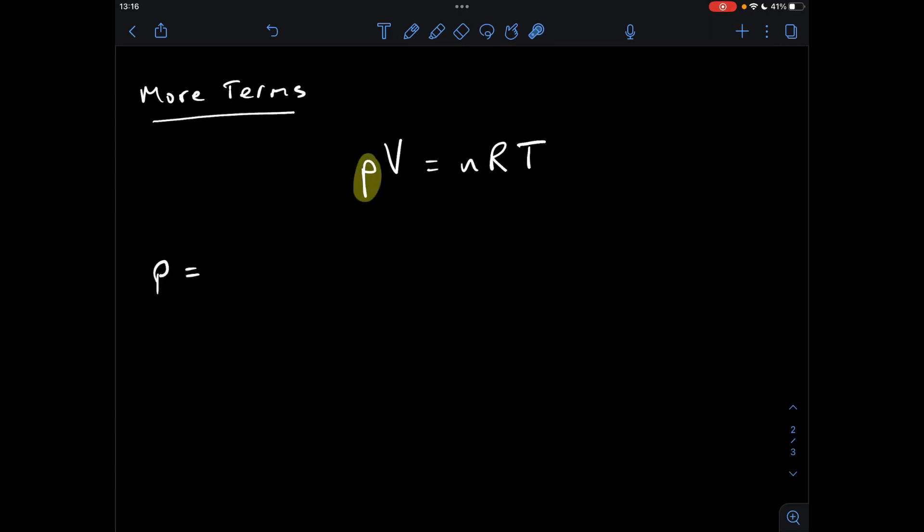OK, so starting with P, it's quite a simple one this, we've just got to get V out of the way, so what do we do? We take it over to the other side, but it goes on the bottom.